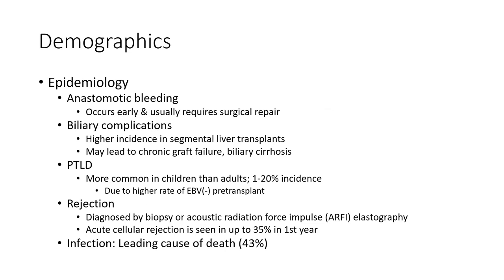Anastomotic bleeding occurs early and usually requires surgical repair. Biliary complications have a higher incidence in segmental liver transplant and may lead to chronic graft biliary cirrhosis. PTLD is more common in children than adults, with a 1 to 20% incidence due to the higher rate of EBV-negative status pre-transplant. Rejection is diagnosed by biopsy or acoustic radiation force impulse elastography. Acute cellular rejection is seen in up to 35% in the first year. Infection is the leading cause of death at 43%.